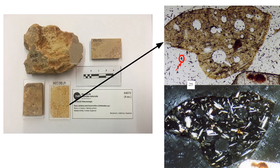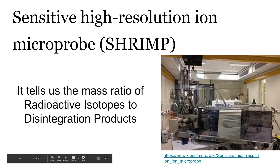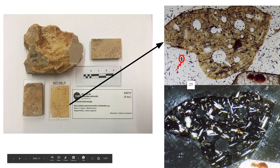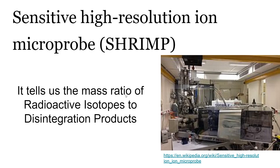You pinpoint the mineral you want to use and put it in a Sensitive High Resolution Ion Microprobe — or SHRIMP for short. This fancy and expensive device — this blurry picture is from Wikipedia — is something we usually ship the slides off to get tested, because it's very expensive and there aren't very many; you kind of have to get put on a waiting list. It tells us the mass ratio of the radioactive isotopes to disintegration products.